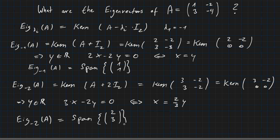So the eigenspace for eigenvalue minus 2 of matrix A is the span of the vector (2, 3) — you can see this by inserting y equals 3, giving x equals 2. The eigenspace is one-dimensional because the kernel is one-dimensional: the rank of the reduced matrix is 1, and since it's a 2×2 matrix, the kernel has dimension 1. Having found the vector (2, 3) in the kernel, it already generates the entire eigenspace.